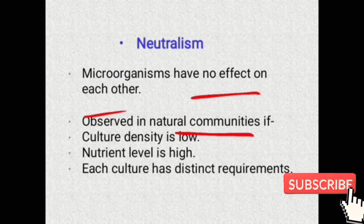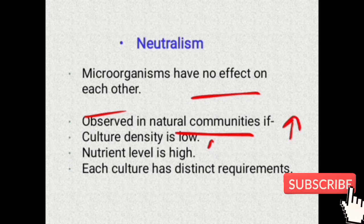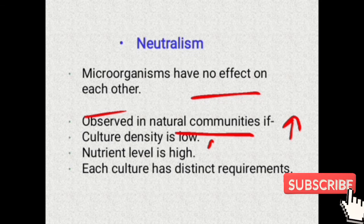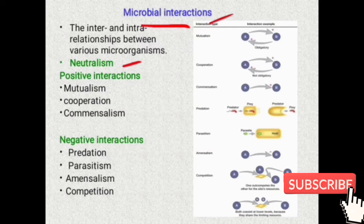Neutralism can be observed in natural communities of microorganisms where the cultural density is low and the nutrient level is high. When the nutrient level is high, there is no competition, predation, or parasitism for nutrients, so these organisms live neutrally.